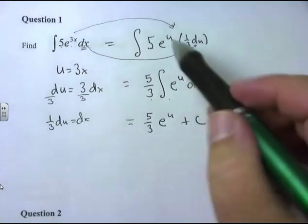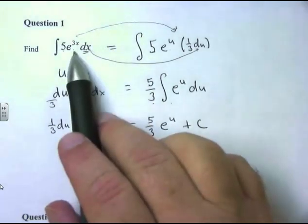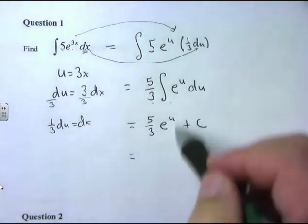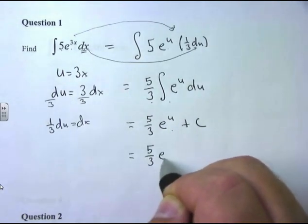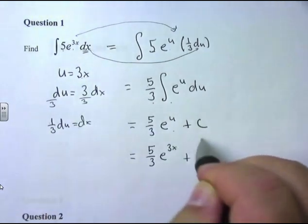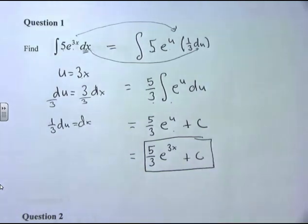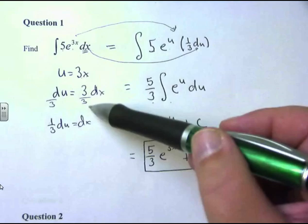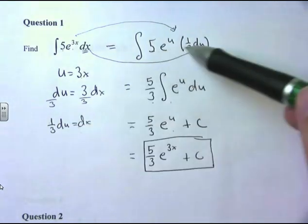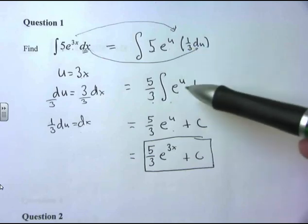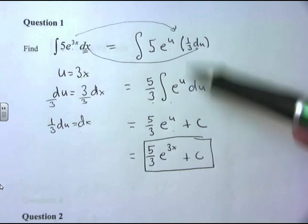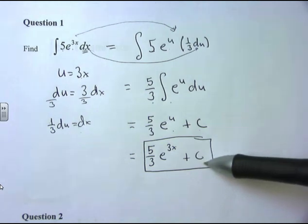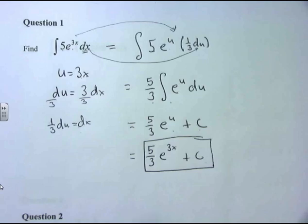Be careful — this is your answer in terms of U, but you have one more step. The original problem was in terms of x, so I expect the answer in terms of x. The last step is back substitution: replace U with 3x. So the final answer is 5/3 e to the 3x plus C. To summarize the steps: 1) find U, 2) take dU, 3) move the constant aside, 4) substitute, 5) clean it up, 6) apply the memorized formula, and 7) back substitute.